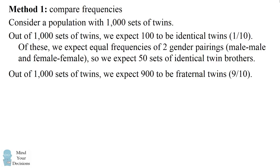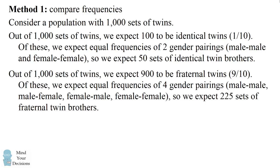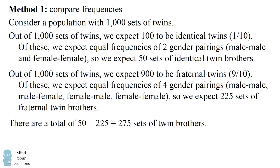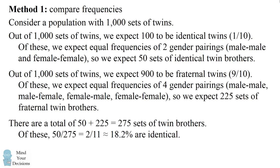On the other hand, we expect 900 to be fraternal twins because that's 9 out of 10. Of these, we expect equal frequencies of 4 gender pairings — male-male, male-female, female-male, and female-female — so we expect 225 sets of fraternal twin brothers. So in total, we expect 50 plus 225, which equals 275 sets of twin brothers. Out of these, 50 are identical, which is 2 out of 11, or approximately 18.2%.